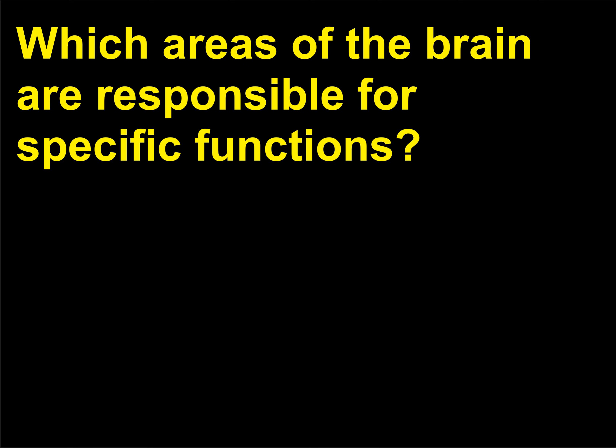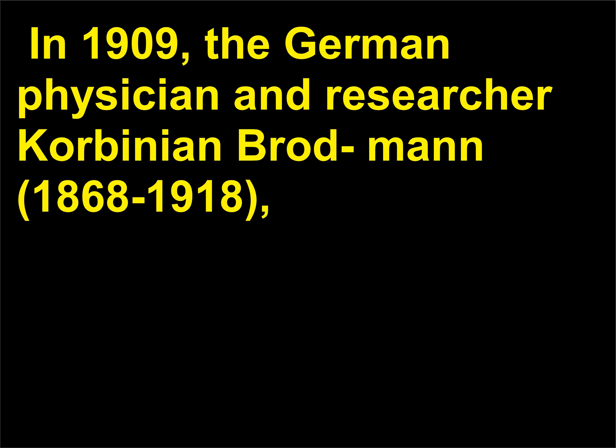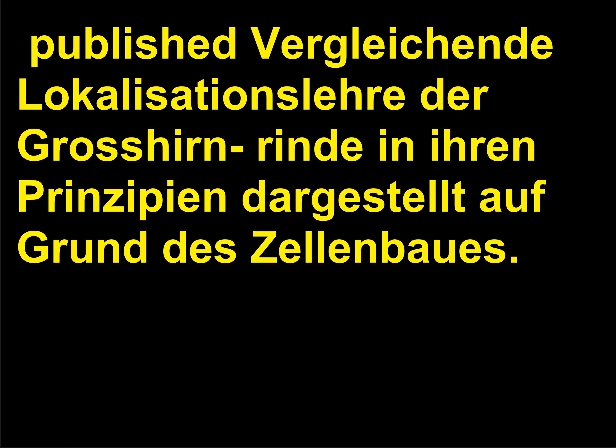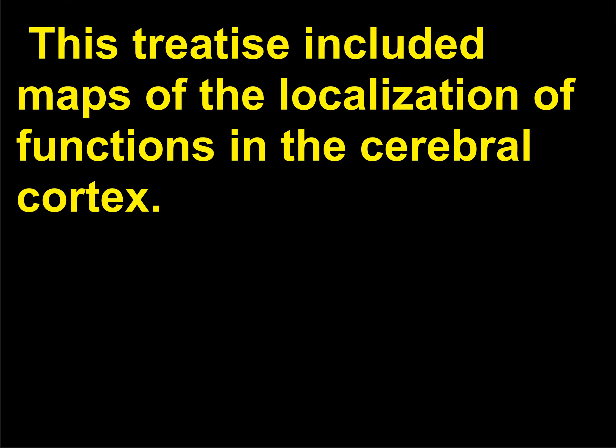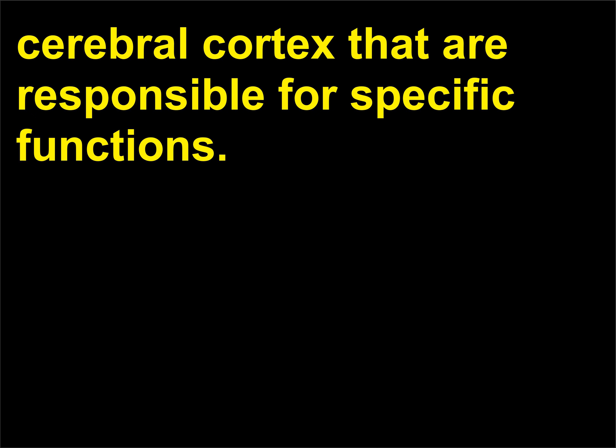Which areas of the brain are responsible for specific functions? Researchers know that certain areas of the brain are responsible for certain general functions. In 1909, the German physician and researcher Corbinian Brodmann (1868–1918) published a treatise that included maps of the localization of functions in the cerebral cortex. Brodmann's maps are still used to depict the areas of the cerebral cortex responsible for specific functions.